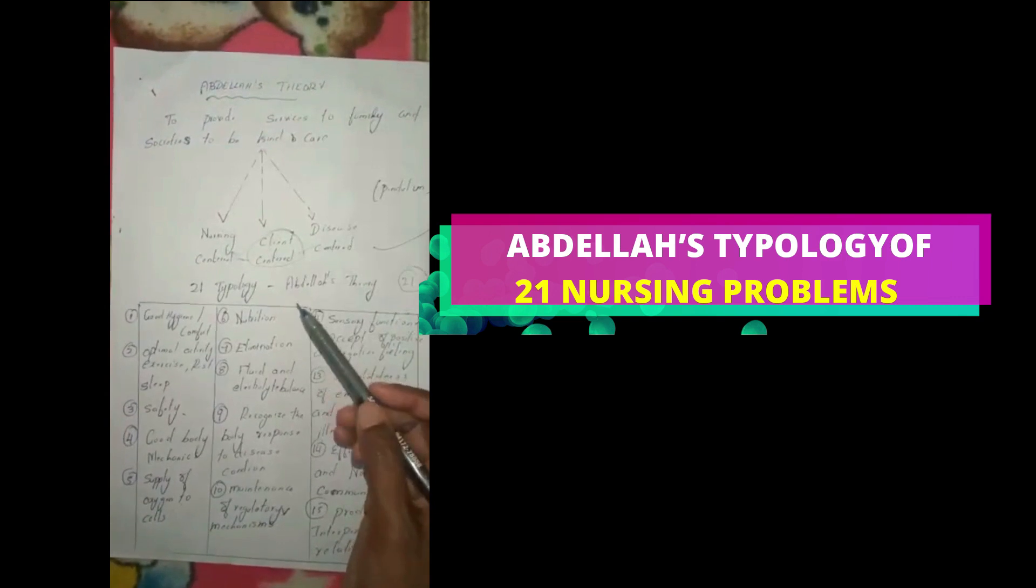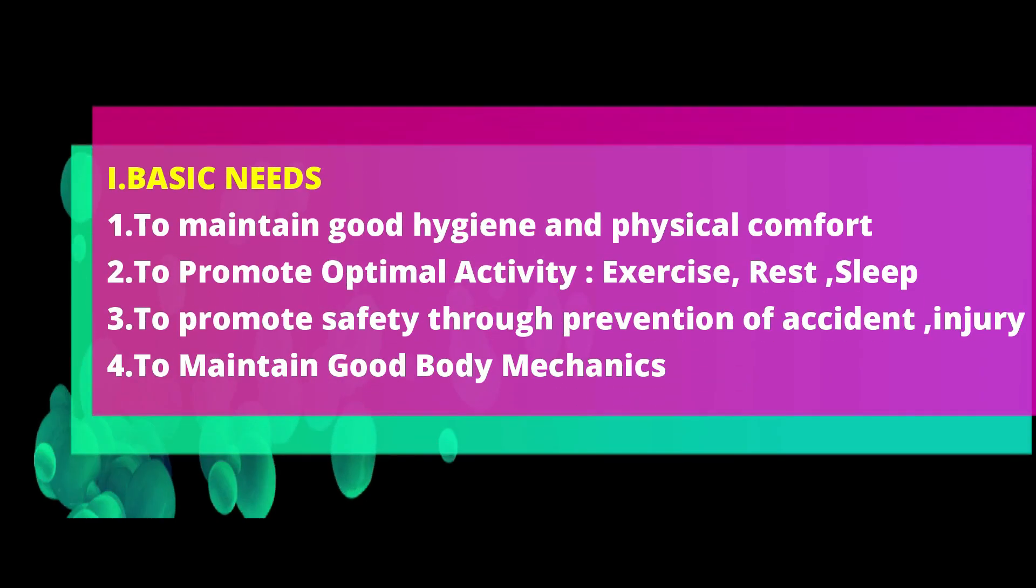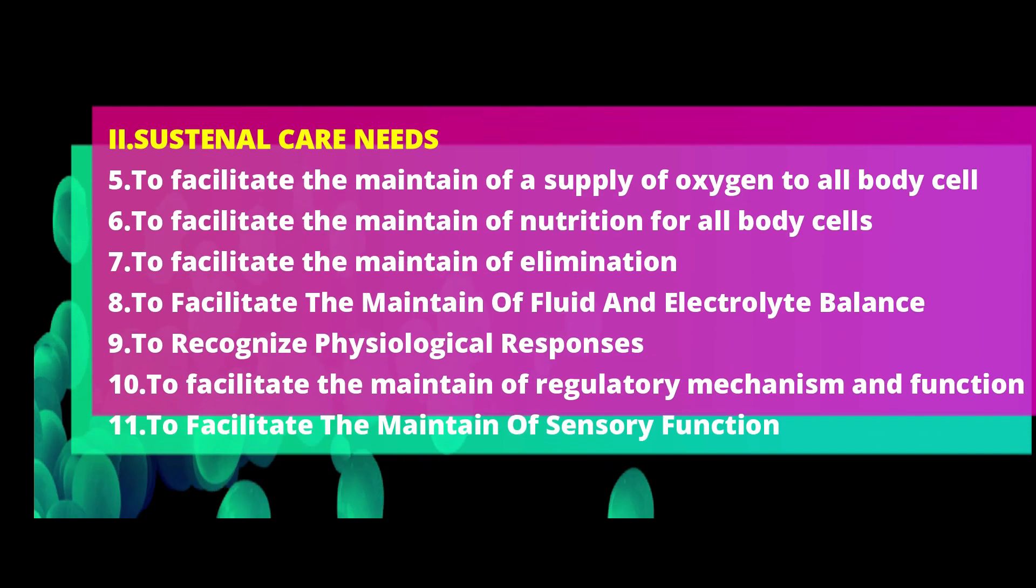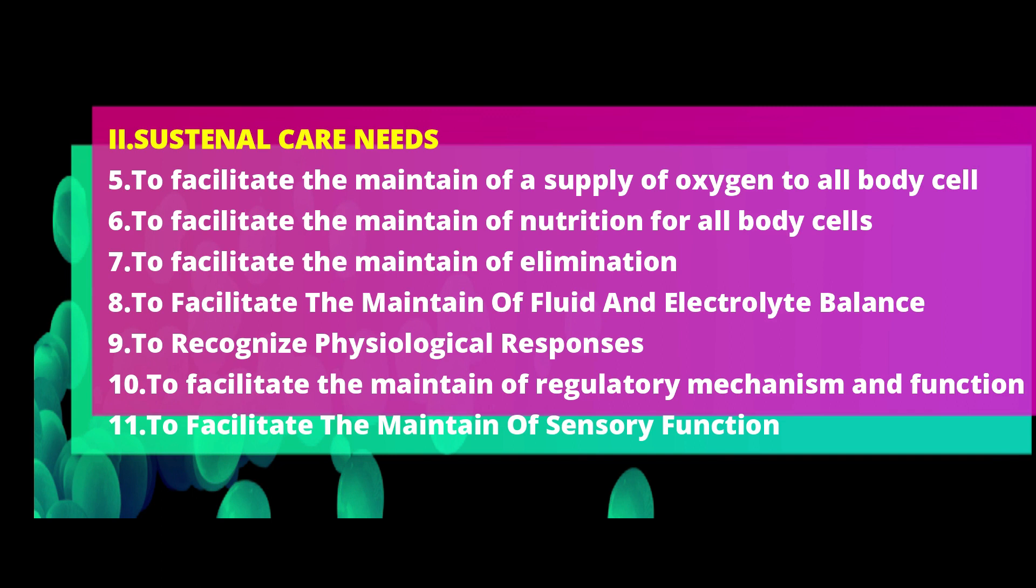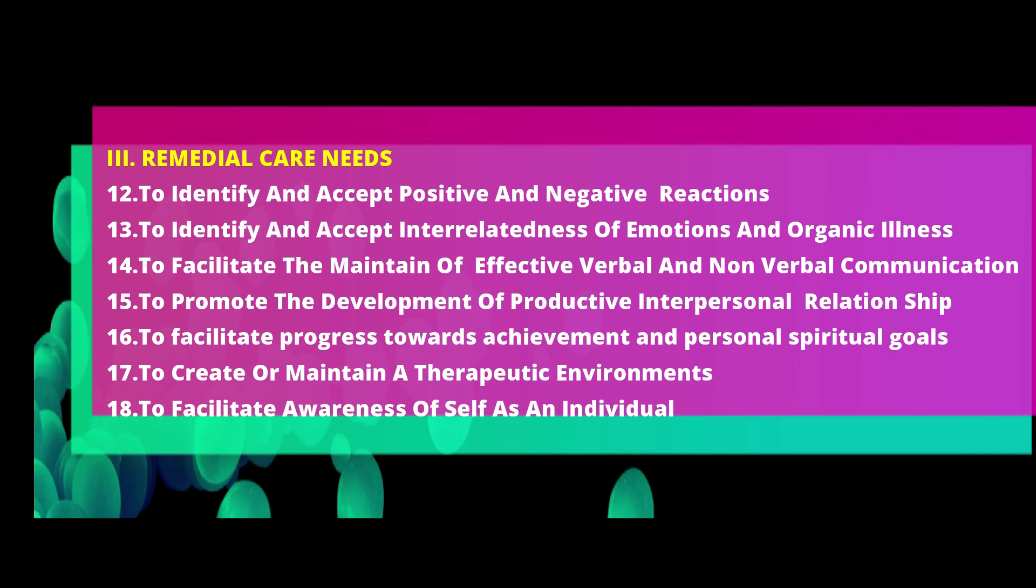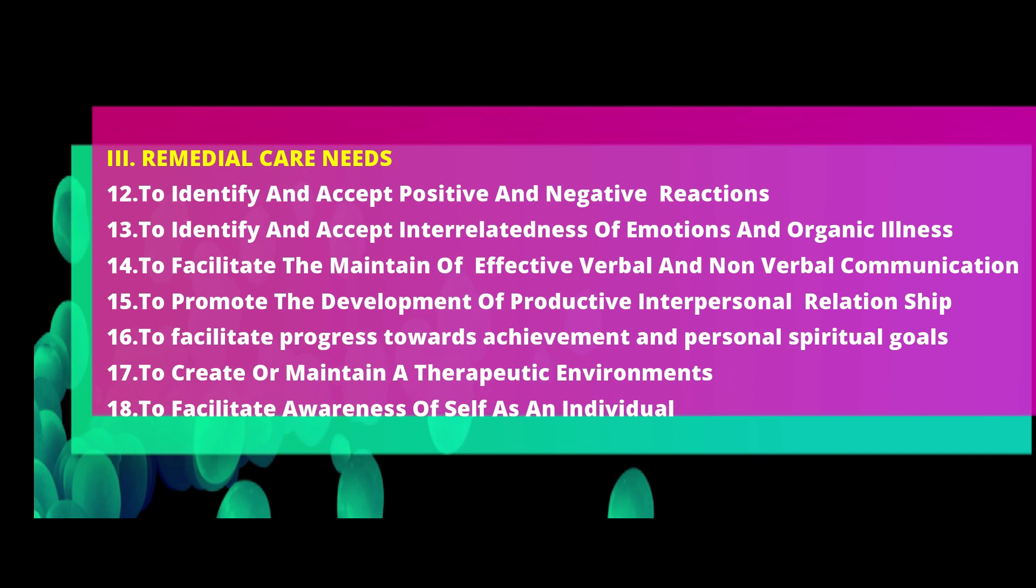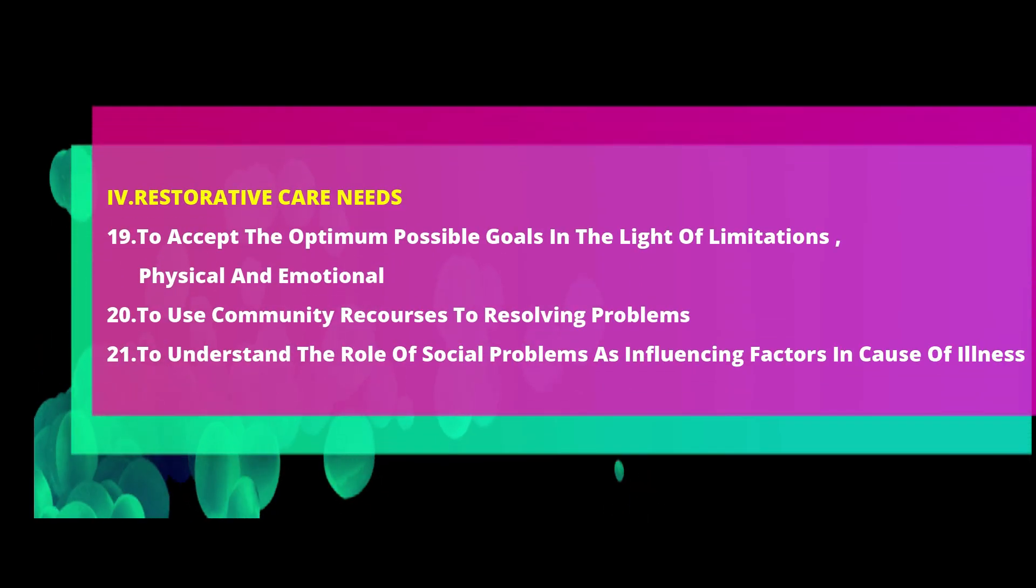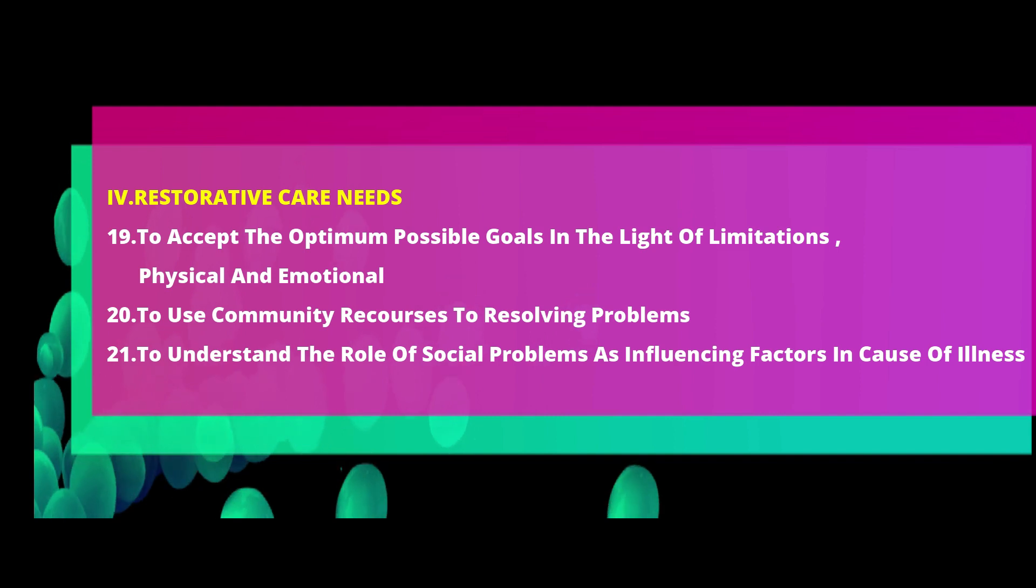So these are all 21 typology of Abdellah's theory. First is hygiene, optimal activities, safety, good body mechanics, supply of oxygen to the cell, nutrition, proper elimination, fluid and electrolyte balance, recognize the body response to disease condition, maintenance of regulatory mechanism, maintenance of our sensory function, acceptance of positive and negative feeling, interrelatedness of emotion and organic illness, effective verbal and non-verbal communication, productive interpersonal relationship, achievement of goals, create therapeutic environment, self-awareness, acceptance of goals, use of resources, and understanding of social problems.